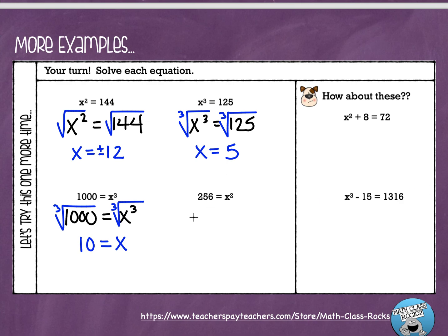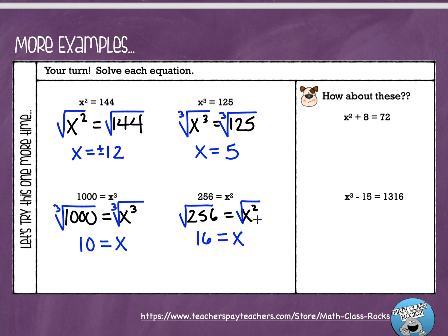Next example: 256 equals x squared — again, the variable is on the right side, but that's fine. We're going to find the square root on each side. The square root of 256 is 16. Because this is a problem where we have x squared, we are going to have two solutions: 16 times 16 is positive 256, and so is negative 16 times negative 16 — two negatives give a positive. So I'll put that plus-minus sign in front, showing x can be positive or negative 16.